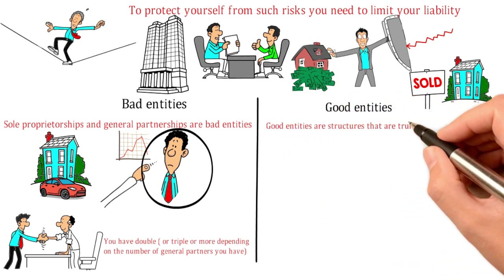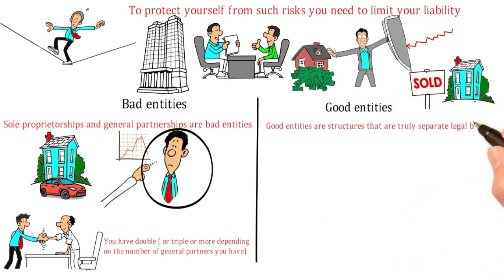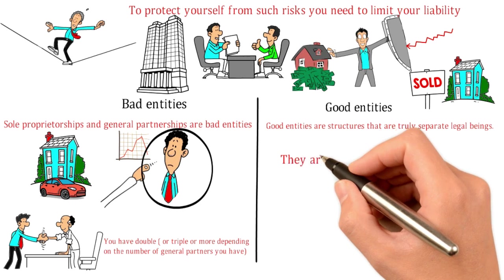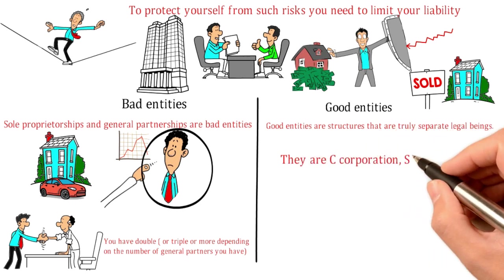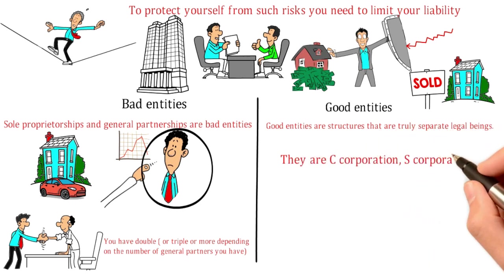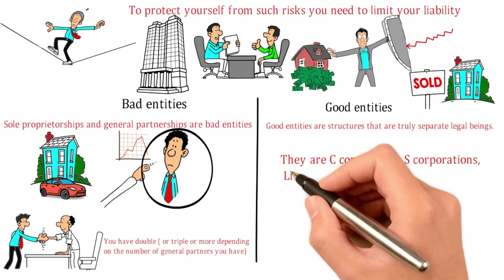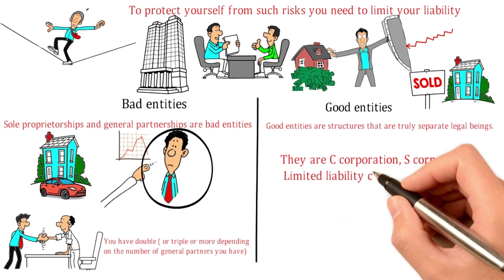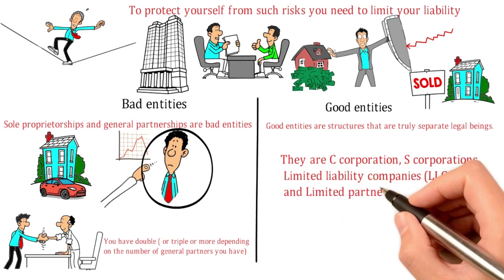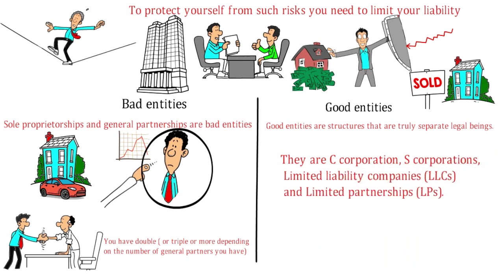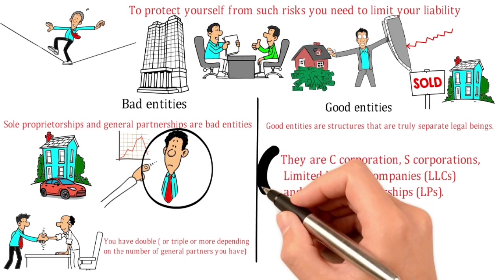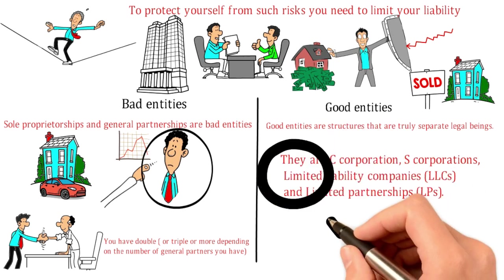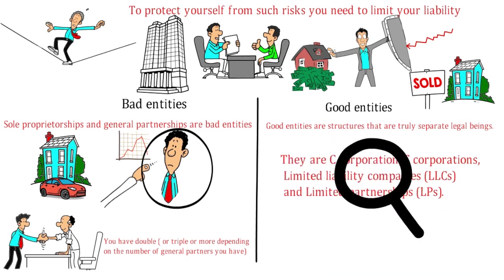Good entities are structures that are truly separate legal beings. They are C corporations, S corporations, limited liability companies or LLCs, and limited partnerships or LPs. Each one has its own advantages and specific uses.